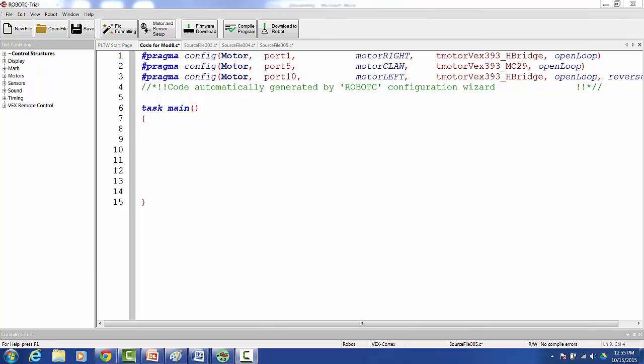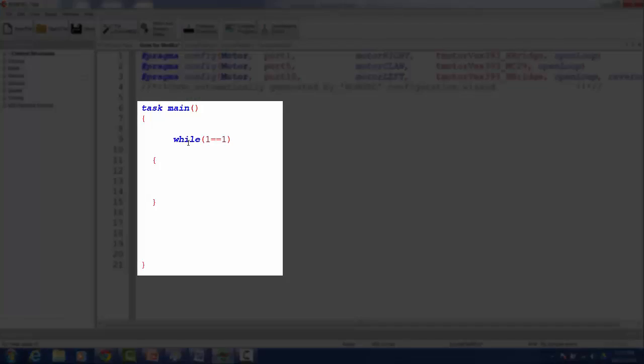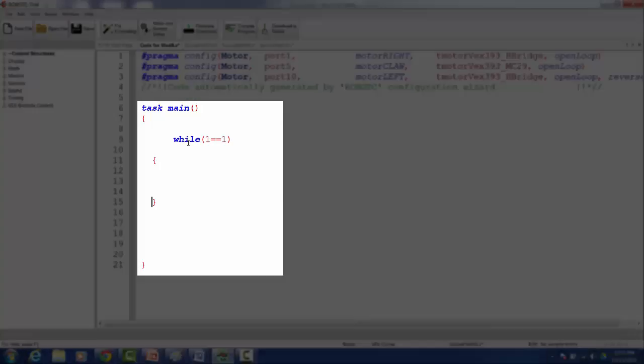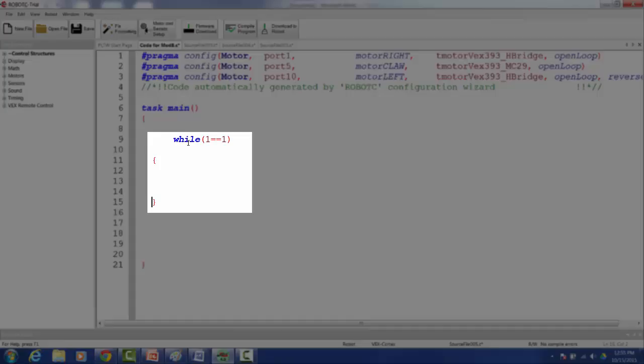First, we place our infinite while loop into Robot C. Just as all of our code must fall within the brackets of our task main, all of our remote control code must fall within the brackets of our infinite while loop.